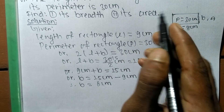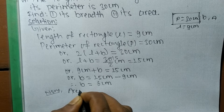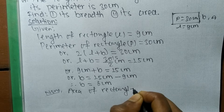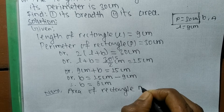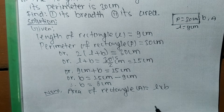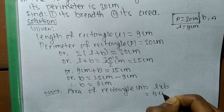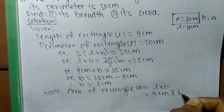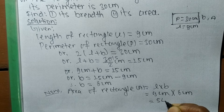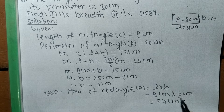Now we have to find out its area. The area of a rectangle — we denote area by A — is equal to L × B, that is length times breadth. Here the length is 9 cm and the breadth is 6 cm. So 9 × 6 = 54 cm². The area of the rectangle is 54 cm².